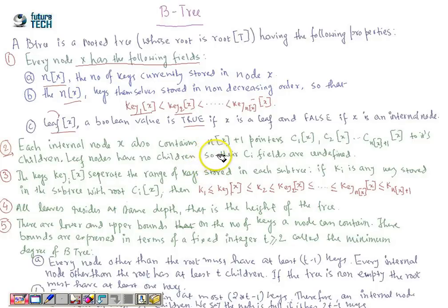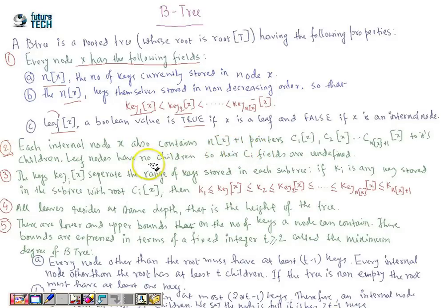If there are three keys, then there are four pointers, and those pointers hold the addresses of the node's children. Leaf nodes have no children, so the ci field of a leaf node is undefined.